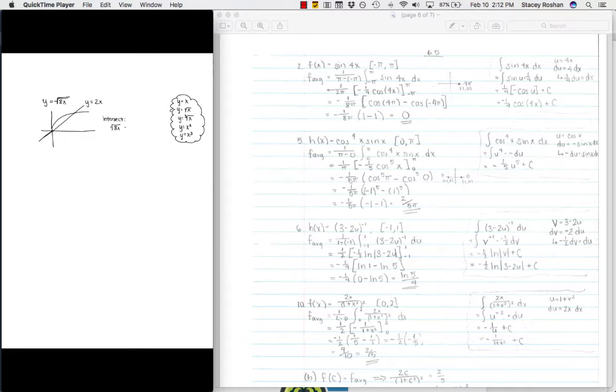So where do these intersect? Root 8x equals 2x. Let's square both sides. So I get 8x equals 2x squared is 4x squared. Bring everything to one side because do not ever divide by x. So we have 4x squared minus 8x equals 0. I could then factor out a 4x. I'm left with x minus 2. So 4x equals 0 means x equals 0. x minus 2 equals 0 means x equals 2. So my intersection points are 0 and 2.